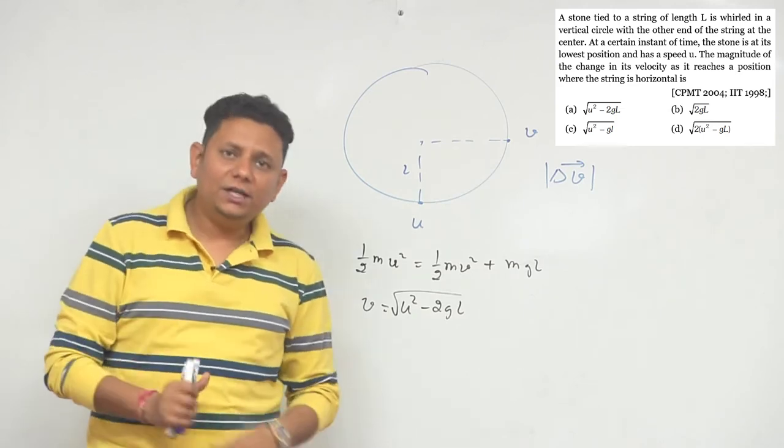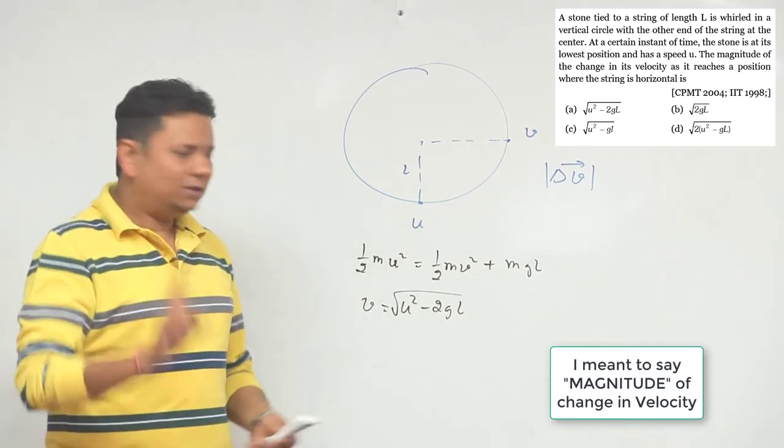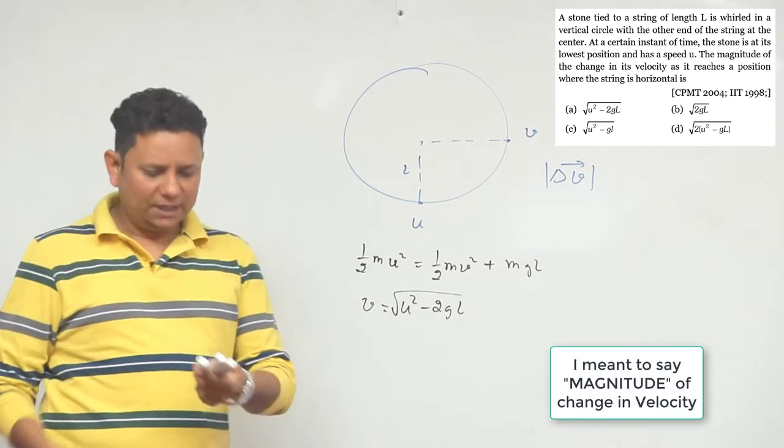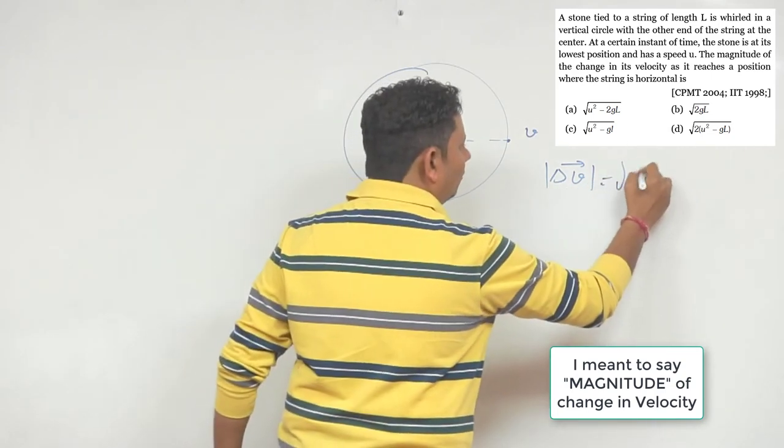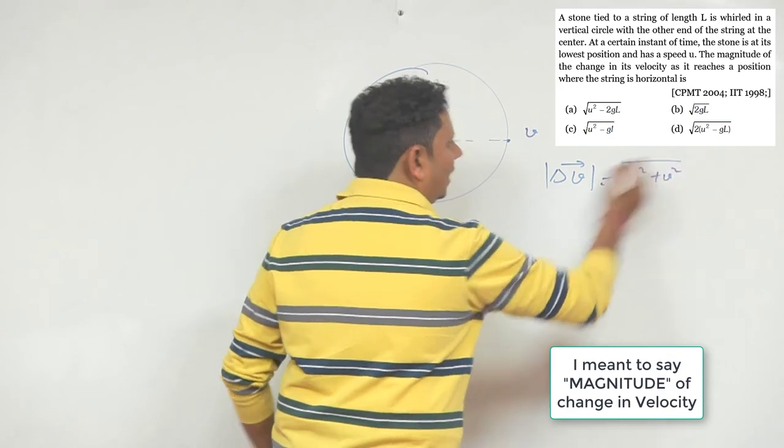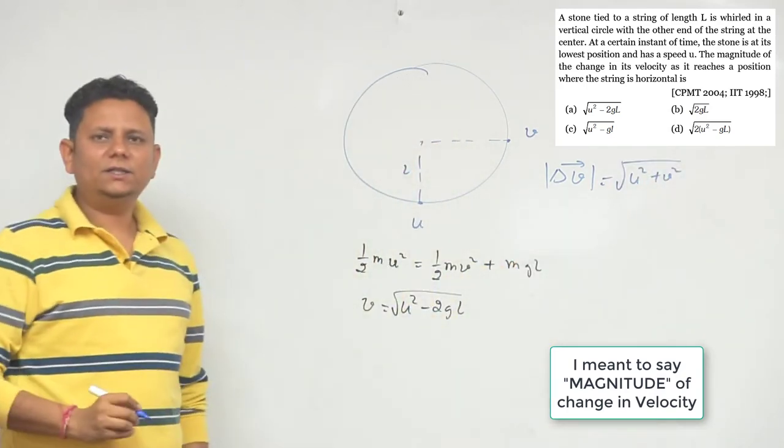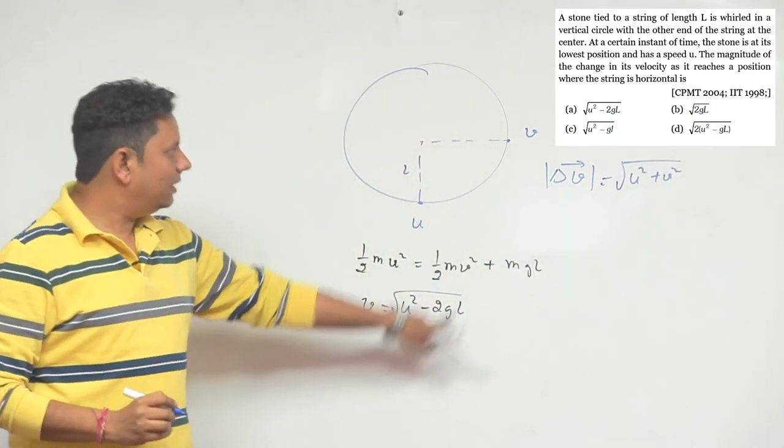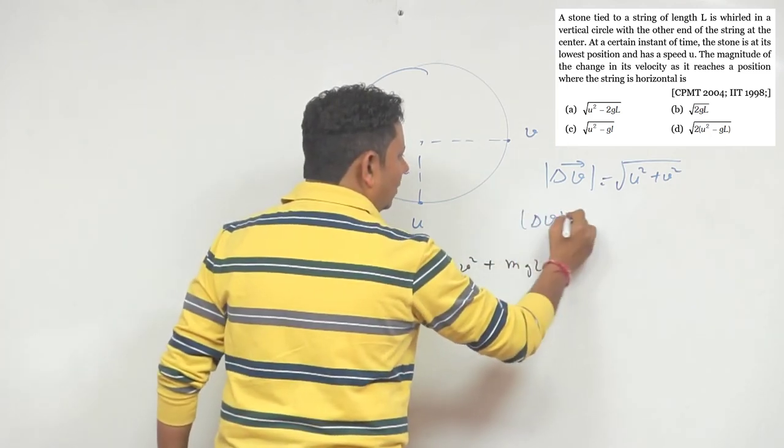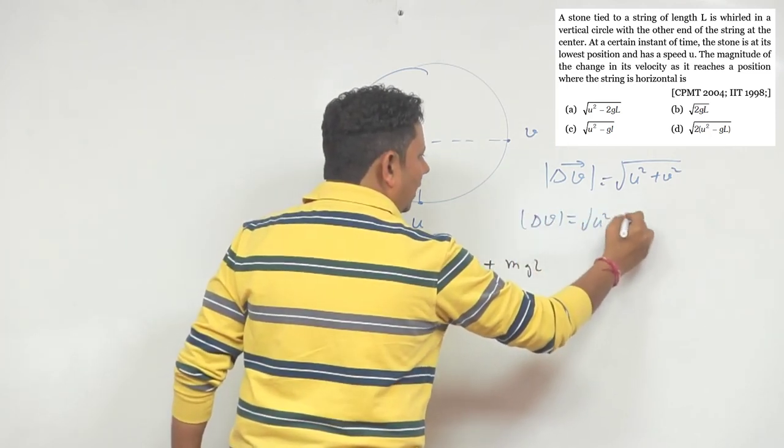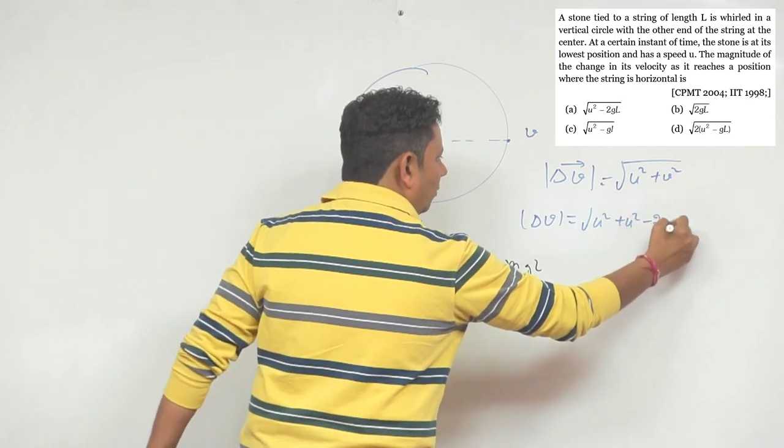Change in velocity is not going to happen like that. Change in velocity delta V is under root of U squared plus V squared. This is the change in velocity value. Now, if we find delta V, the magnitude will be equal to square root of U squared plus U squared minus 2gL.